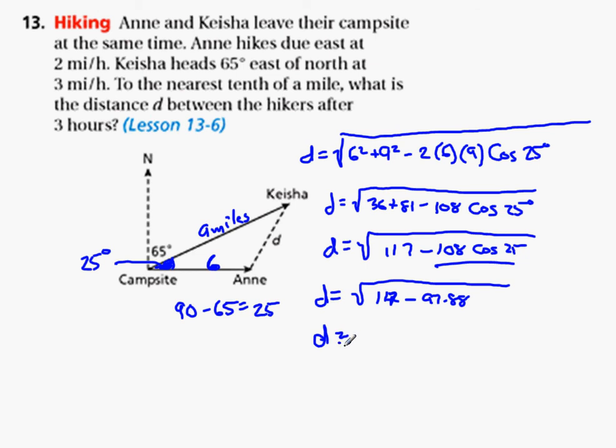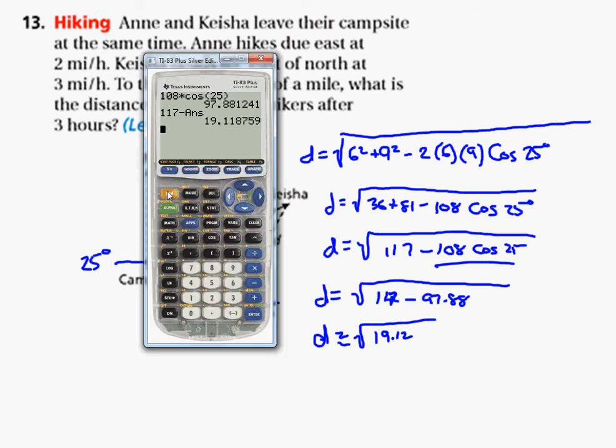D is in the square root of 19.12. 19.12. So we'll come back here. Now we're going to find the square root of that.